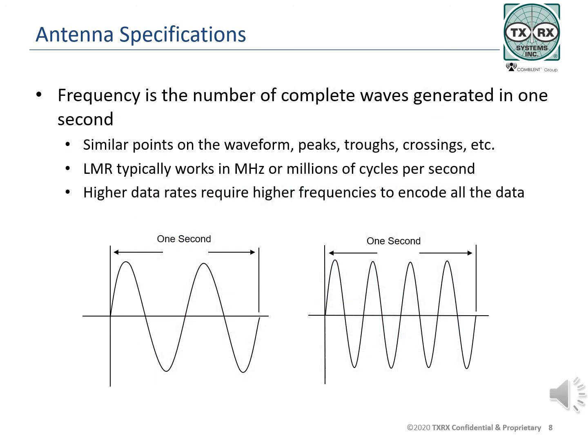The frequency of a signal is the rate at which similar points on radio waves pass by a fixed location in a specified time period, normally one second. We are counting how many radio or electromagnetic waves are generated in one second. The frequency of both signals on this slide is determined by counting the number of complete waves generated in one second — two cycles per second on the left waveform, and four cycles per second on the right. Cycles per second has been replaced by the term hertz, in honor of Heinrich Hertz, an early radio pioneer. A hertz is one cycle per second.